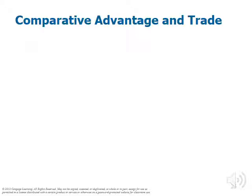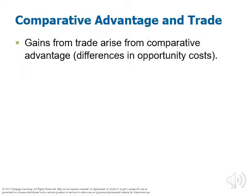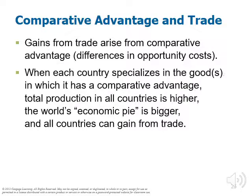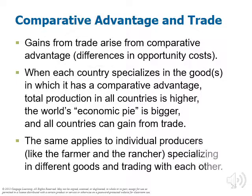Comparative advantage and trade: the gains from trade arise from comparative advantage — keep that distinction firm in your mind. These are differences in opportunity cost. When each country specializes in the good in which it has a comparative advantage, total production in all countries is higher, the world's economic pie gets bigger, and all countries gain from trade. As the economic pie gets bigger, there is more plenty, less shortage, and as a consequence prices tend to fall and goods become more accessible, raising standards of living in both countries. The same concept applies to individual producers, like a farmer and a rancher, specializing in different goods for which they have a comparative advantage.